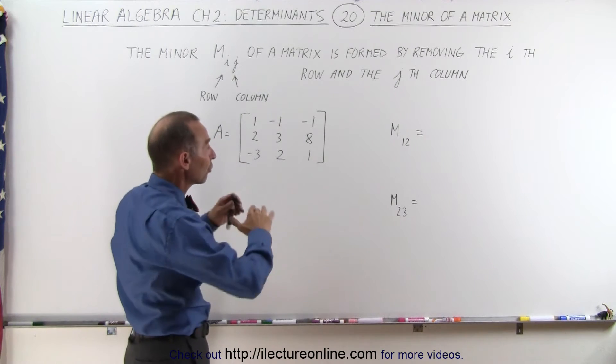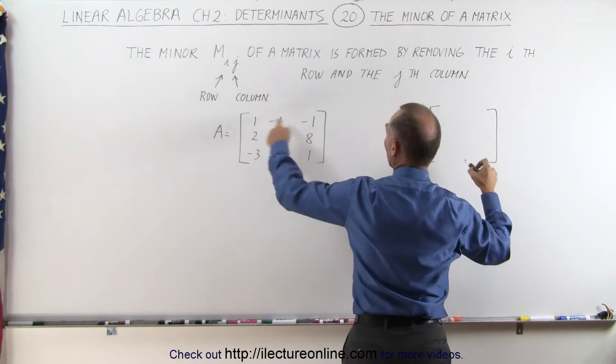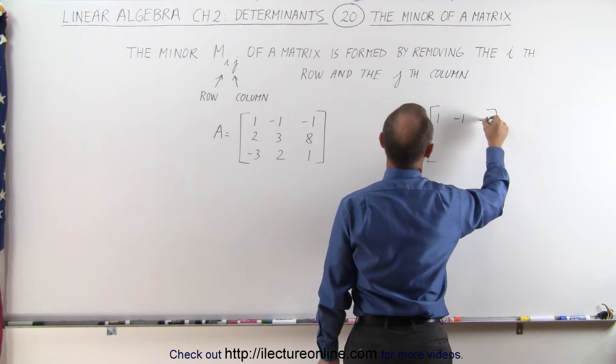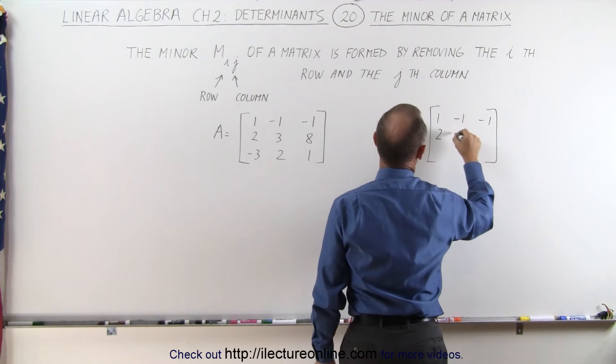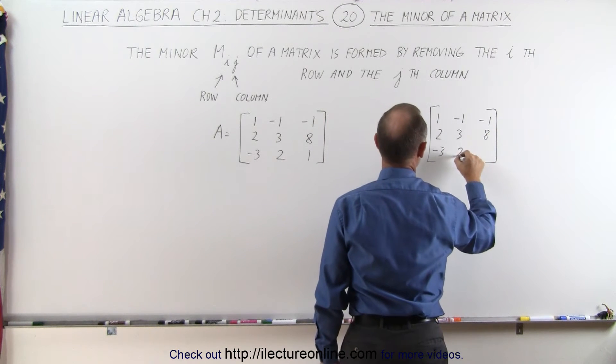So what you do is you first rewrite the matrix. Put all the same elements in there: 1, -1, -1, 2, 3, and 8, and -3, 2, and 1.